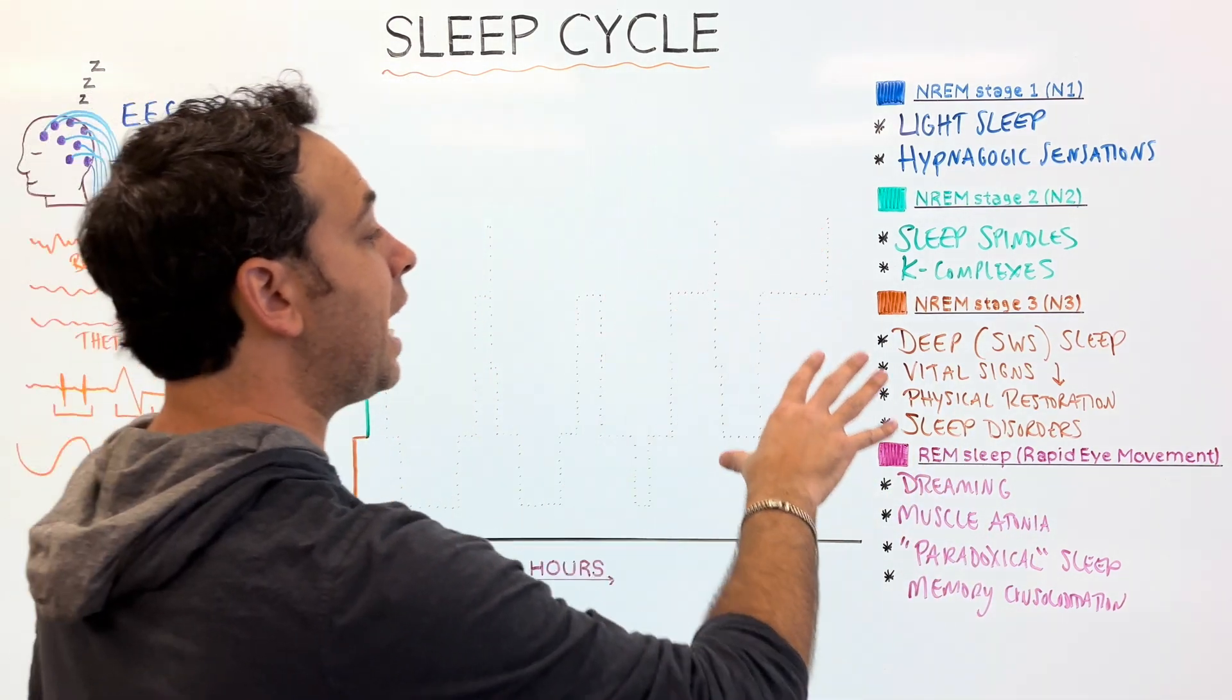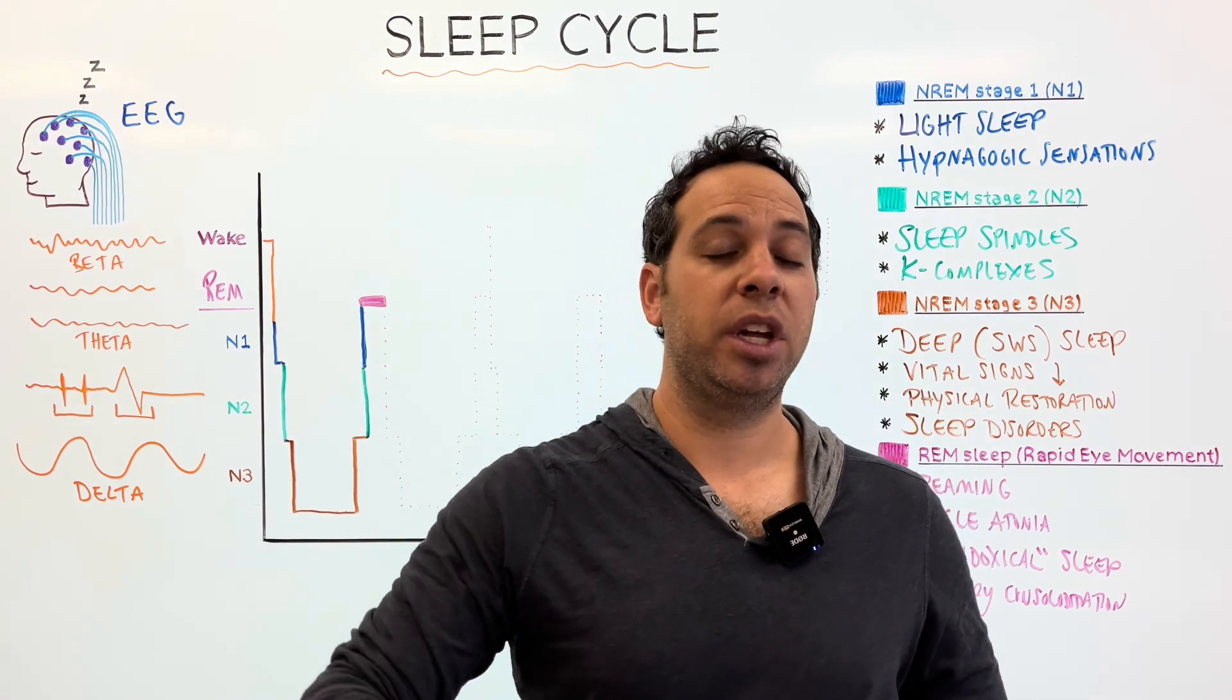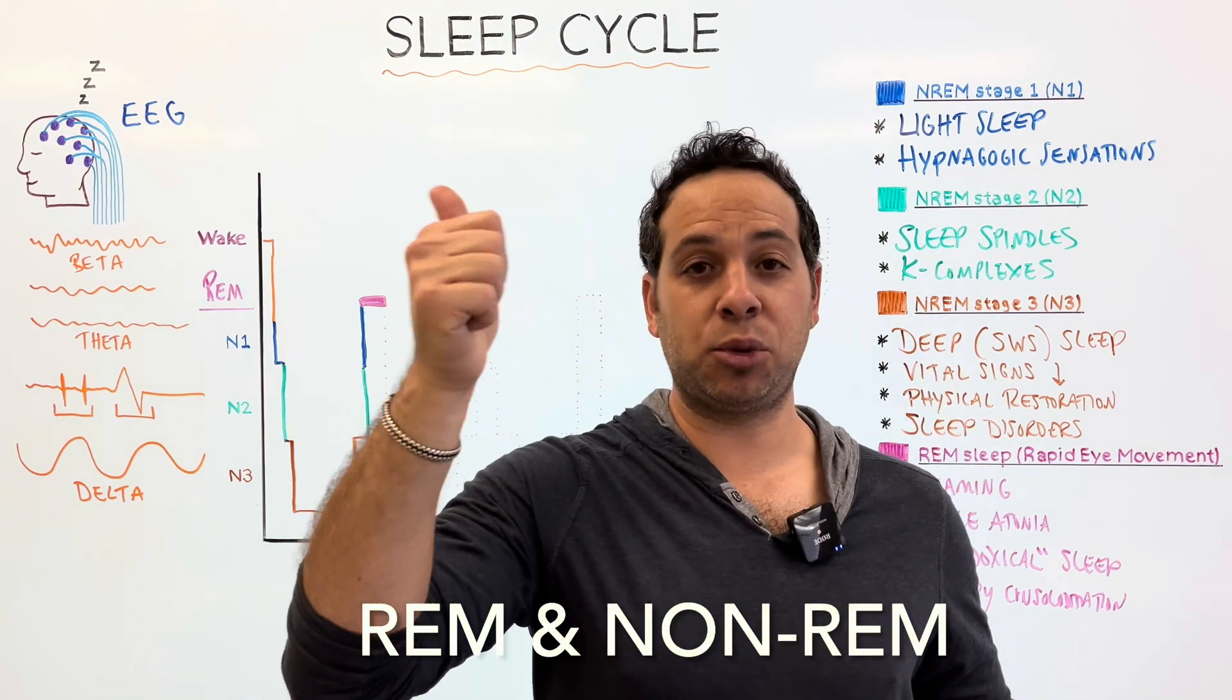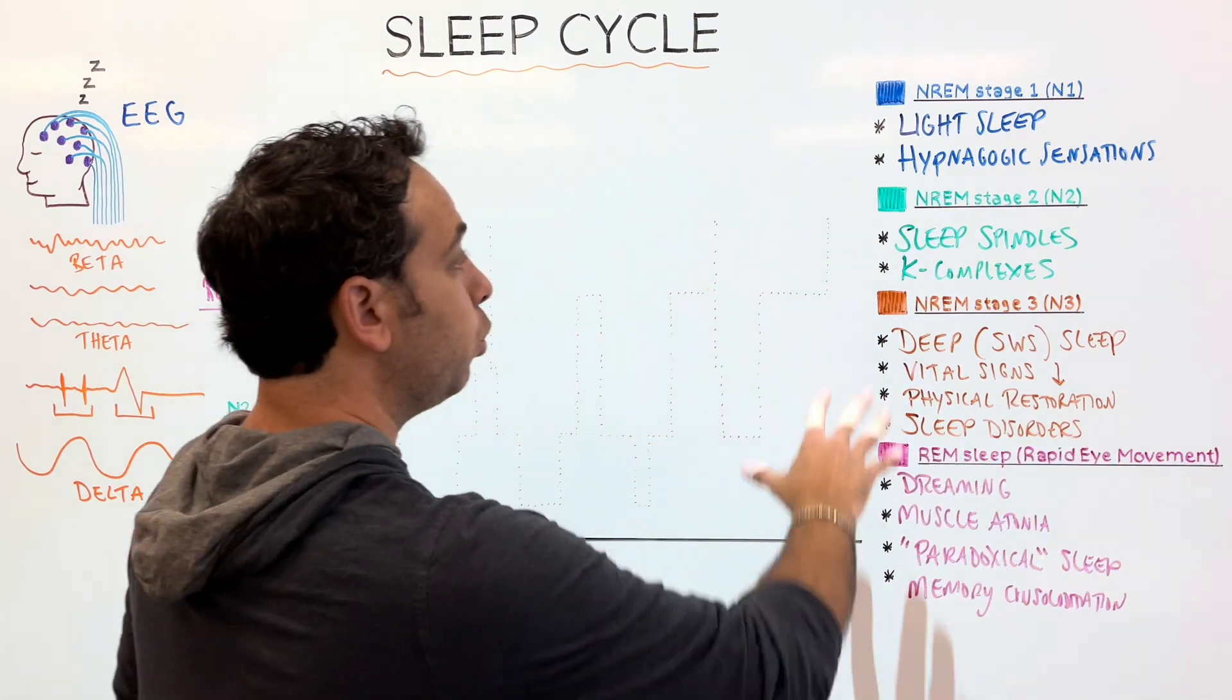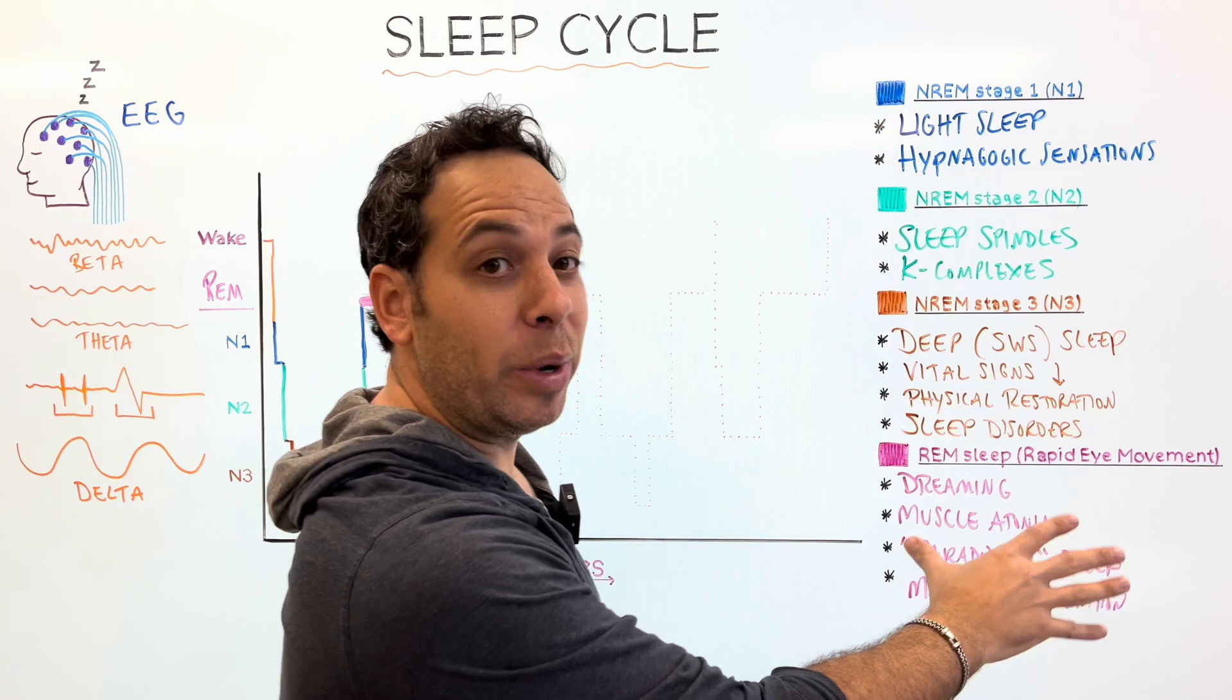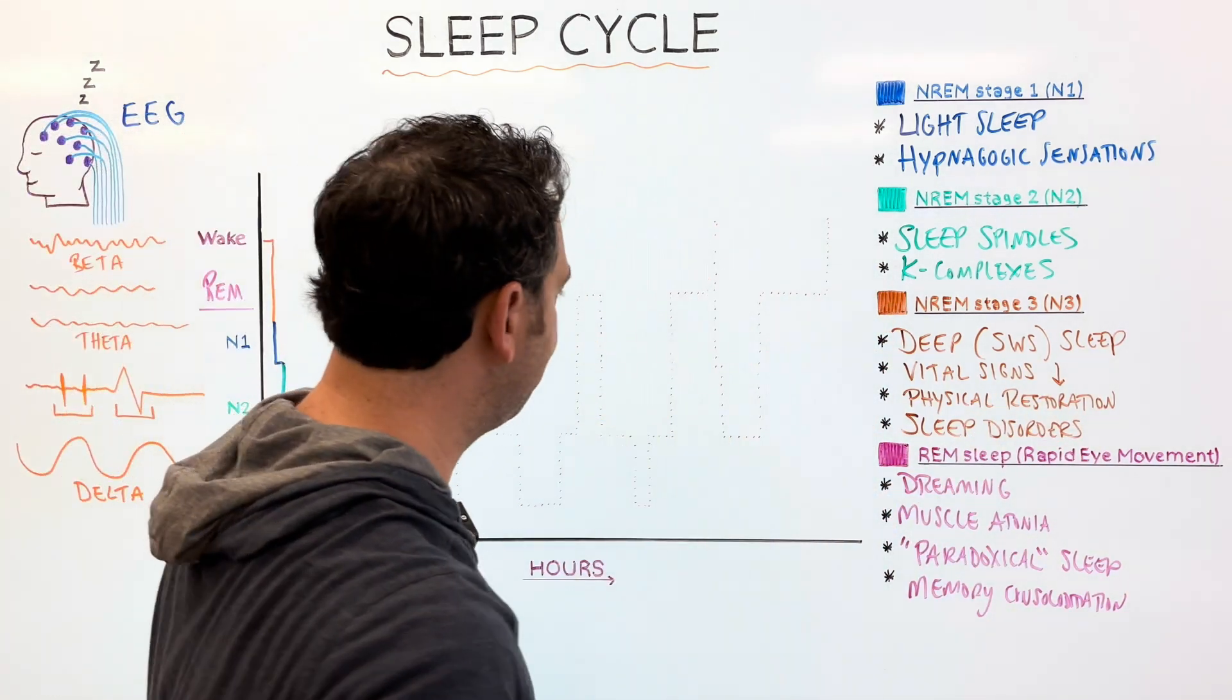So, when we talk about REM and non-REM, here's what you've got to think about. There's essentially two phases of sleep. Your eyes are moving rapidly, that's REM, or your eyes are not moving rapidly. The two phases of sleep. We have no rapid eye movement, and then we have rapid eye movement. So, one, two, and three are non-REM, and then we have REM.